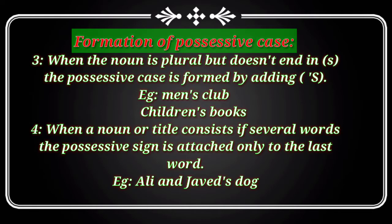When the noun is plural but does not end in S, the possessive case is formed by adding apostrophe S. This means that when we have a plural noun that does not end in S, we add apostrophe and then S.